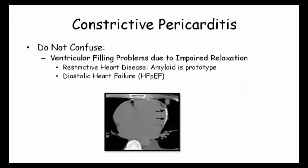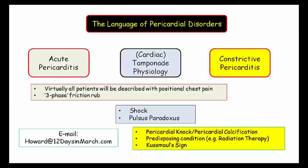Finally, be aware of the other ventricular filling disorders. Whereas constrictive pericarditis is described as an obstruction to filling, restrictive heart disease is better understood as impaired ventricular relaxation. The prototypic conditions are amyloid and diastolic dysfunction, also referred to as heart failure with preserved ejection fraction. These will be further discussed during our presentation of restrictive cardiomyopathies. That concludes our two-part series on pericardial disorders for USMLE Step 1. If you have any questions, please email howard@12daysinmarch.com.